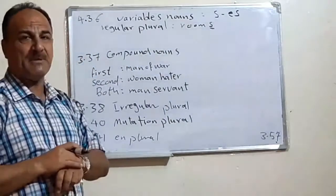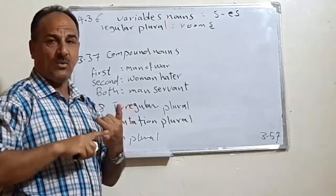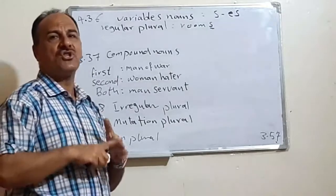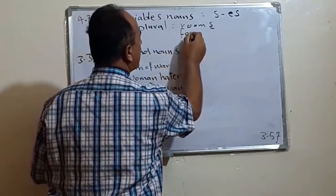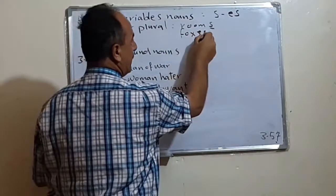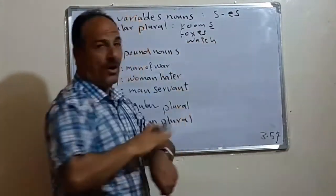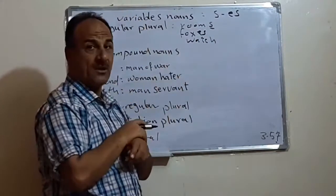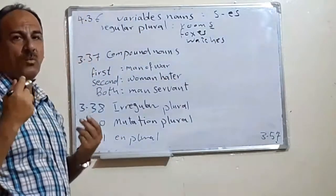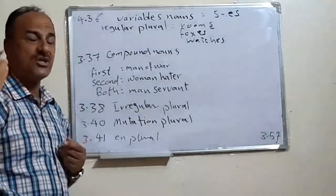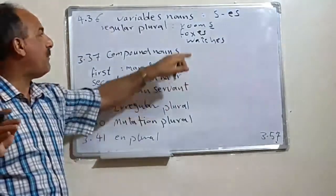Sometimes we add ES, especially after the sibilant sounds. Means if the word ends with S or Z or SH or CH or X, we add ES. If we have just one fox and we make it plural, we say foxes. If we have one watch, we make it into watches. If we have one wish, we say wishes. We add ES.